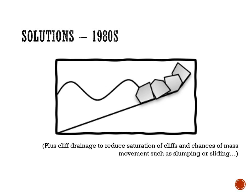In the 1980s a review was held and it was decided that the current defences needed improvements. The sea wall wasn't as effective as it should have been and the groins were becoming less effective over time. Consequently, significant amounts of rock armour were added in front of the sea wall — this absorbs wave energy and helped maintain the sea wall for longer. Cliff drainage was also put in place, which reduced saturation of the cliffs and reduced the chances of mass movement such as slumping or sliding.